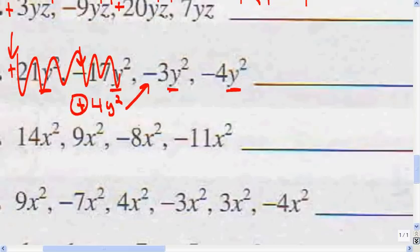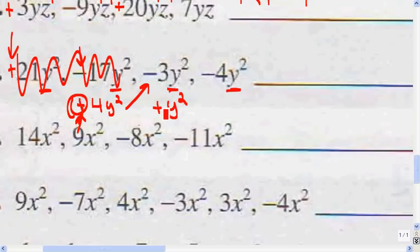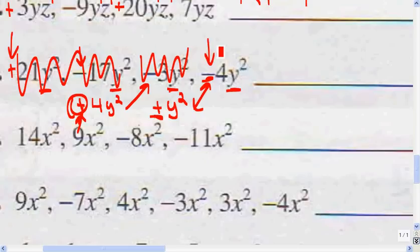Now I've got a negative and a positive, so when the signs are different, I subtract. 4 minus 3 is 1y squared, or just y squared — we don't write the 1. It's positive because 4 was the bigger number and was positive. Now I have 4y left. Signs are different again, so I subtract: 4 minus 1 is 3y. Since the bigger number was negative, my answer is negative 3y squared.